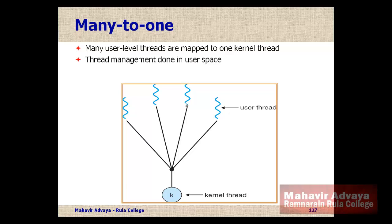Thread management is done in user space — the creation and managing of threads is done in user space. So whenever a thread makes a blocking call the entire process is blocked. This is the drawback of the many-to-one model.